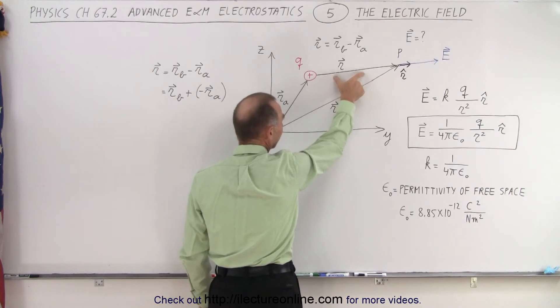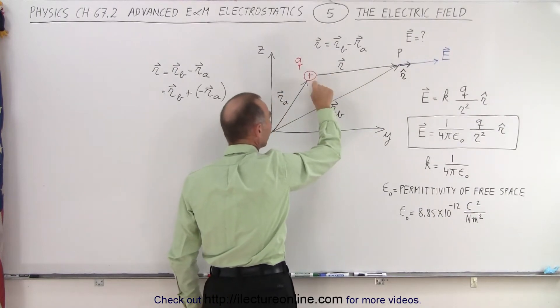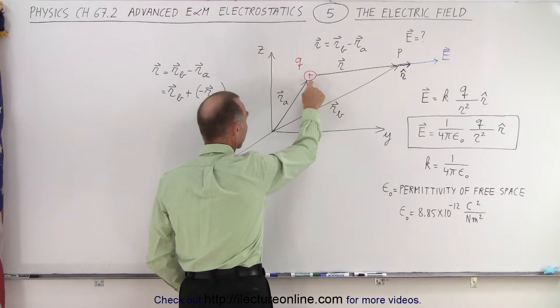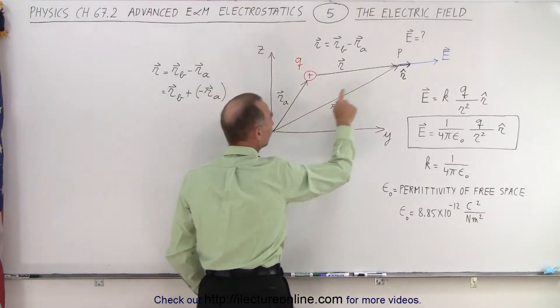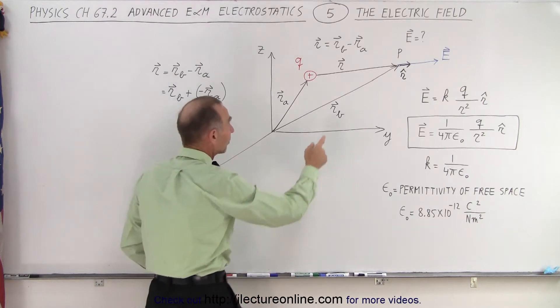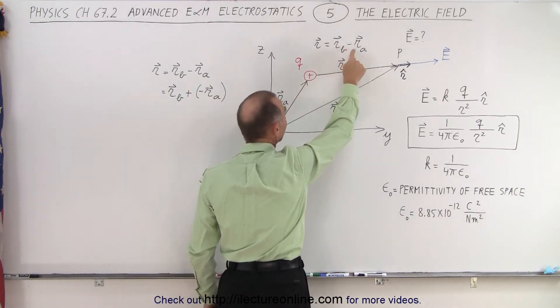How do we define that r vector? We want to know the electric field there in reference to this point charge. This point charge is located r sub a and this point in space is located at r sub b. It turns out that the vector r is simply the difference between r sub b minus r sub a.